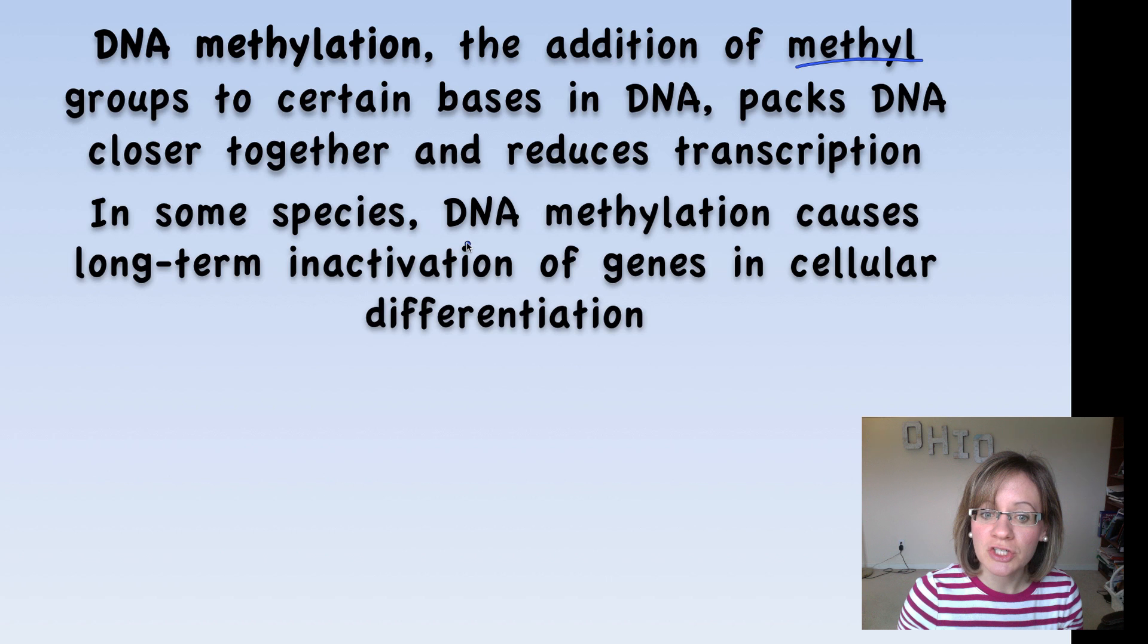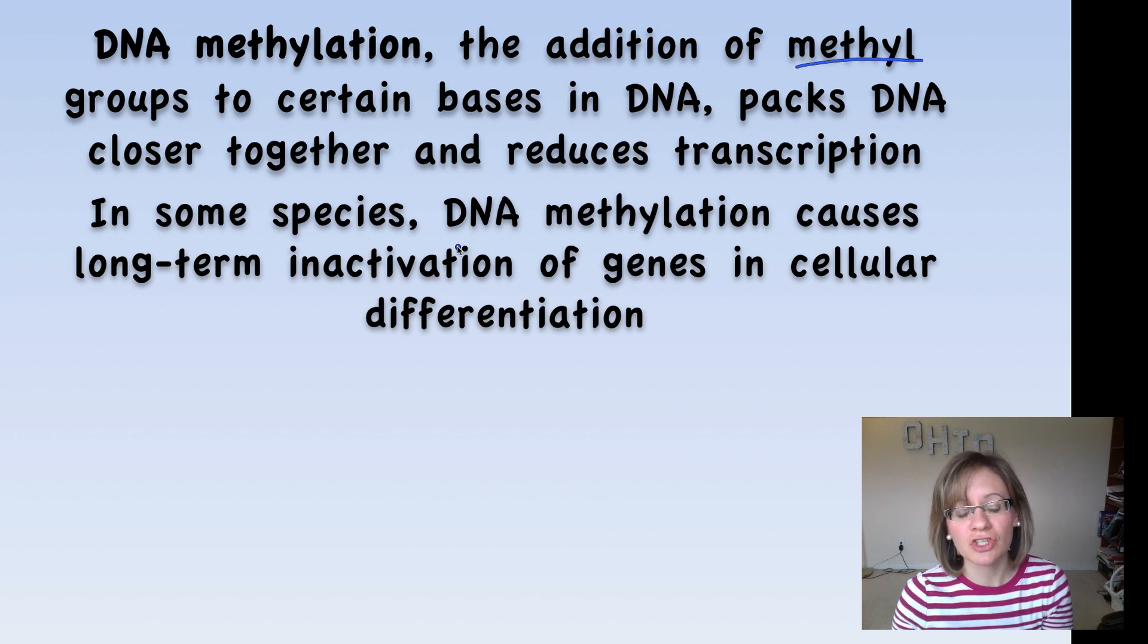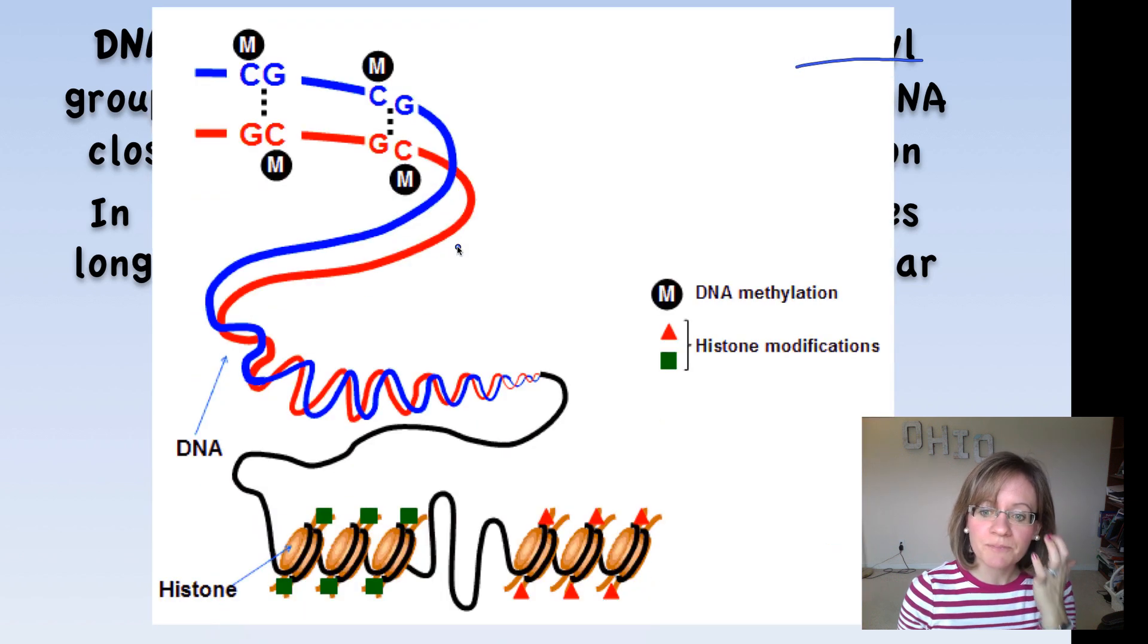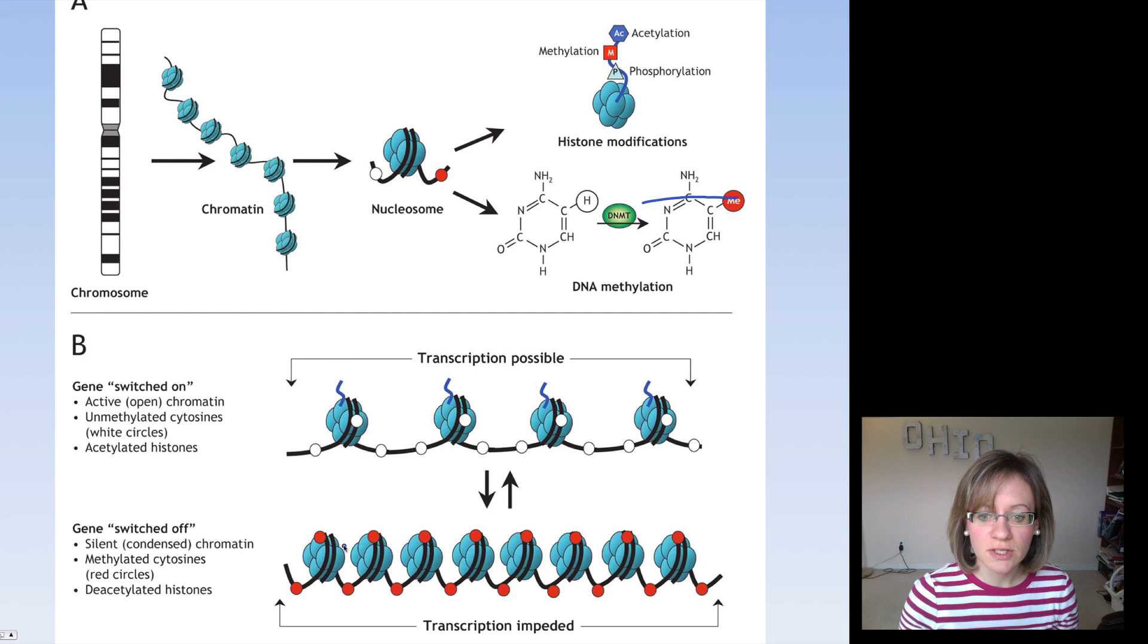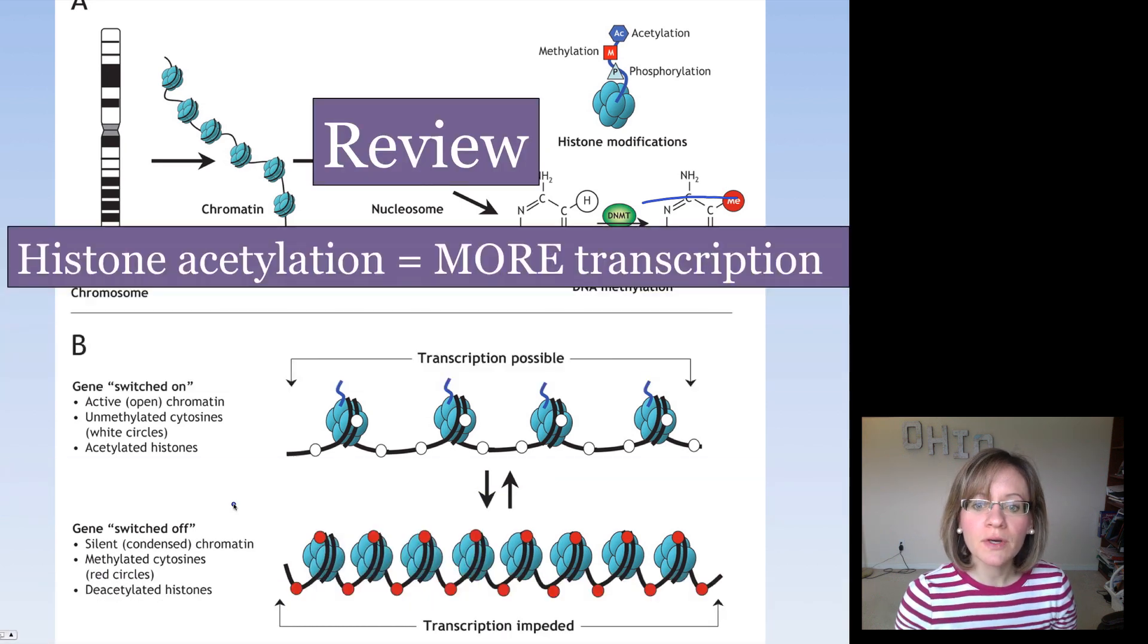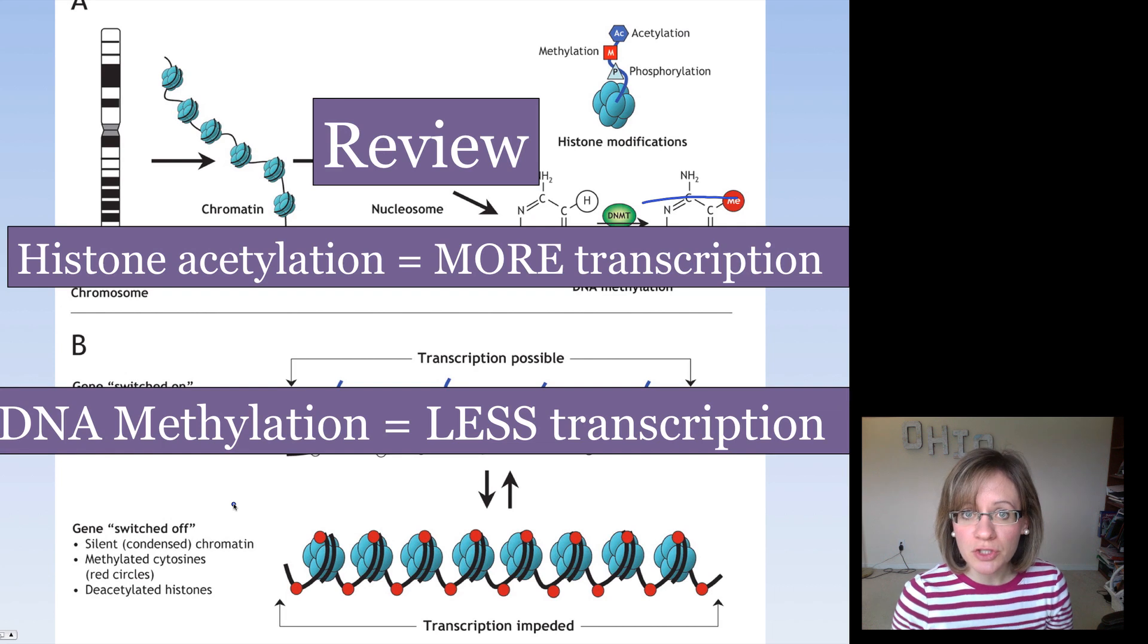And in fact, in some species, DNA methylation can cause long-term inactivation of genes early on in cellular differentiation. So histone acetylation and DNA methylation. Here's a quick figure showing the difference between the two. Methylation occurs on the DNA, acetylation occurs on the histones. Just a summary slide here of when it's switched on and when it's switched off. So you can take a look at that on your own. So review: histone acetylation, more transcription, it's loose. DNA methylation, less transcription, it's being tightly packed together.